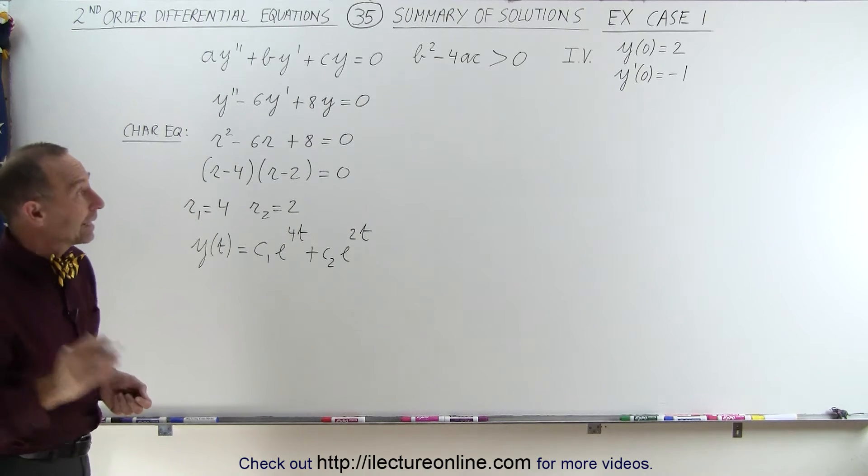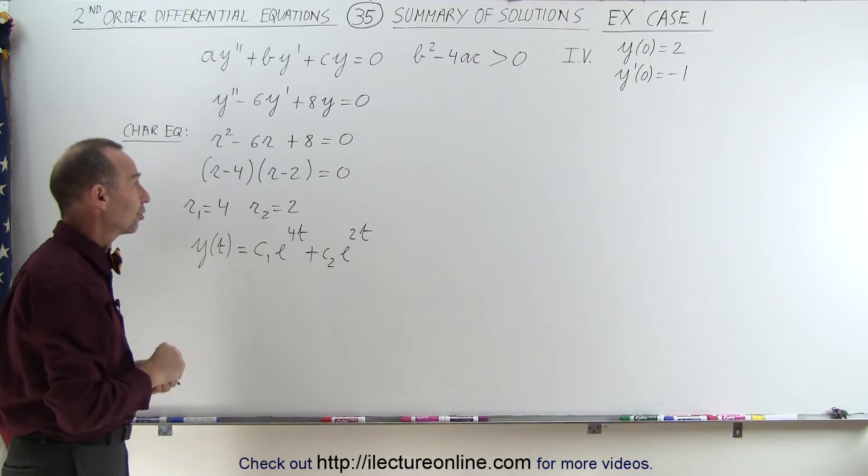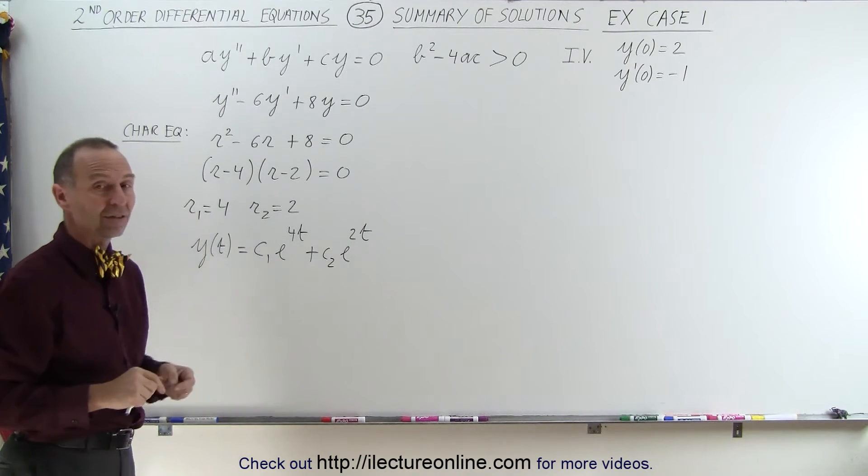Now, since we've been given the initial values at 0 for the function y and the derivative of the function y prime, we should be able to figure out c1 and c2.